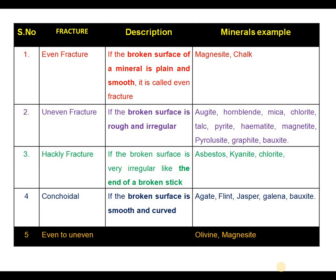Some minerals exhibit conchoidal fracture, in which the broken surface of a mineral is smooth and curved. Some of the quartz family members — agate, flint, jasper — exhibit conchoidal fracture, and also chalcedony and bauxite even exhibit conchoidal fracture.